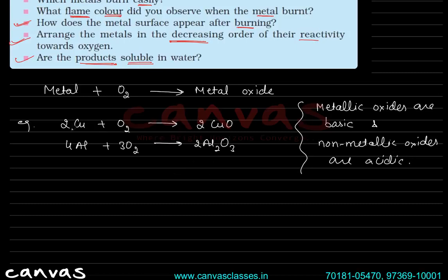Metallic oxides are basic in nature, while non-metallic oxides are acidic in nature. So these are the two cases — metal oxides are basic and non-metal oxides are acidic.